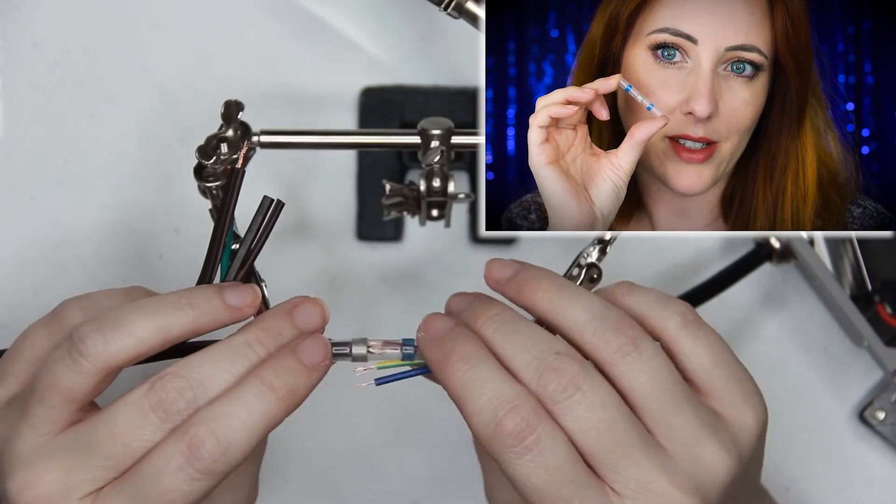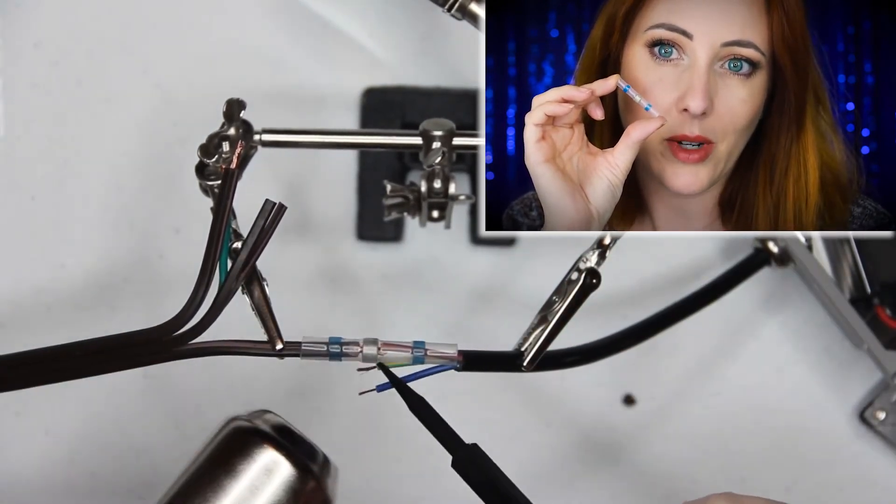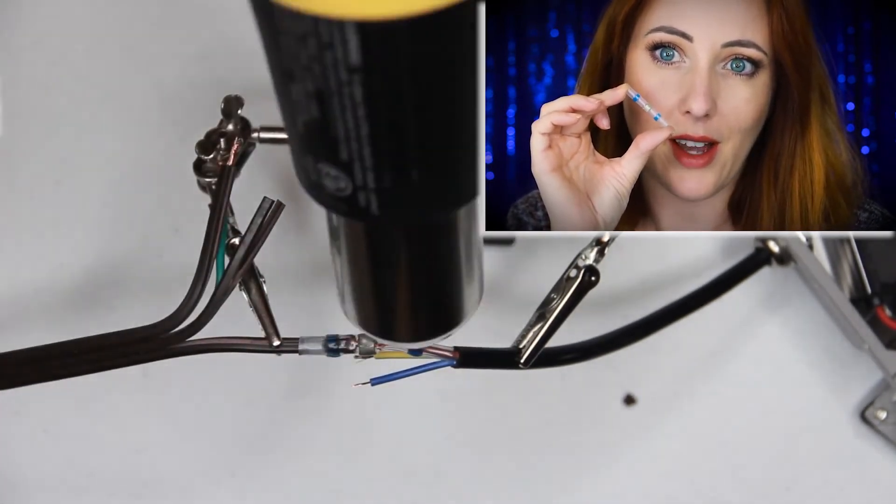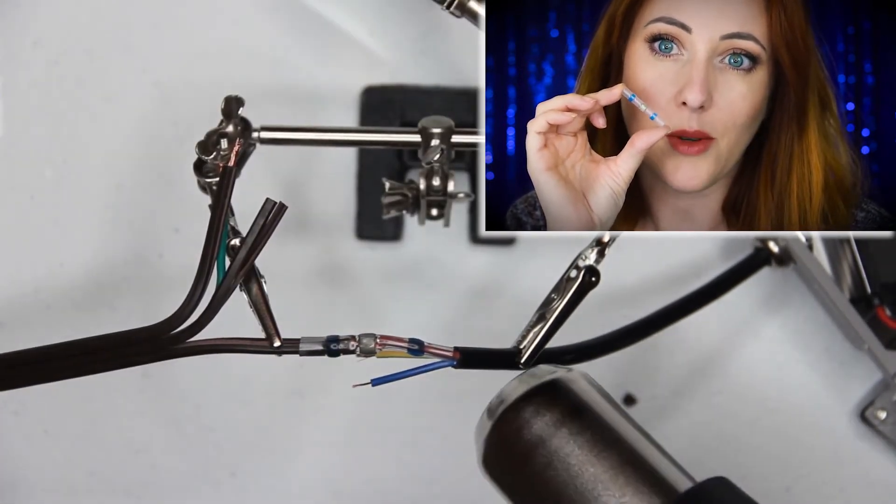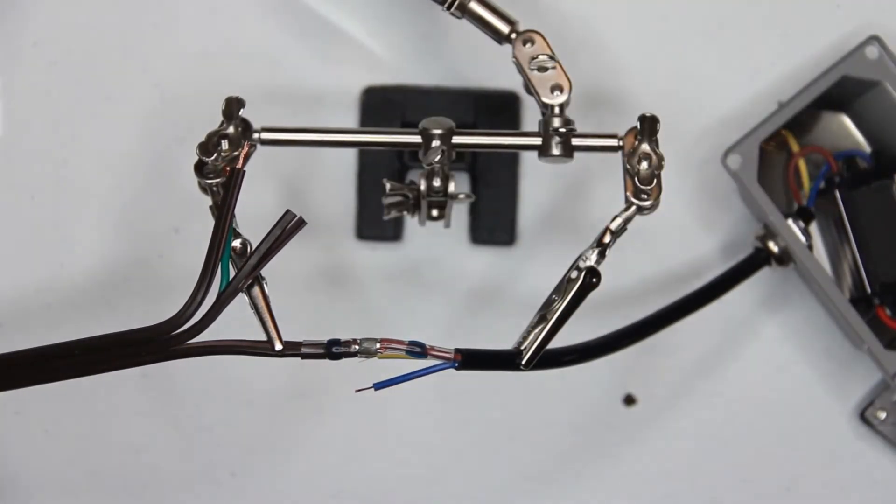Instead of soldering these wires together, I used heat shrink solder tubing. When heated, the silver part in the middle melts, fusing the wires together. At the same time, the blue glue melts, forming a watertight seal.